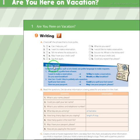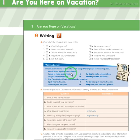Writing corner: In formal situations, such as at a hotel, use polite language to make requests. 'Would you like' is a polite form of 'want.' Instead of saying 'I want to make a reservation,' it's better to say 'I would like to make a reservation.' Similarly, instead of 'Do you want breakfast?' say 'Would you like breakfast?'